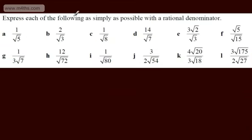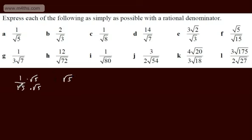OK, we're asked to express each of the following as simply as possible with a rational denominator. Mathematicians hate having an irrational number in the denominator, so we do something called rationalising the denominator. All we need to do in this case is multiply top and bottom by root 5. So 1 over root 5, multiplied top and bottom by root 5: 1 times root 5 is root 5, and root 5 times root 5 is 5 — giving root 5 over 5, a rational denominator.